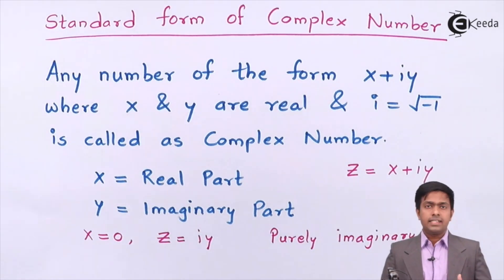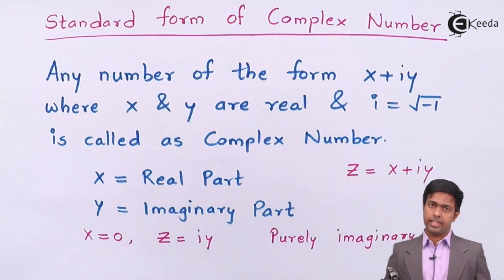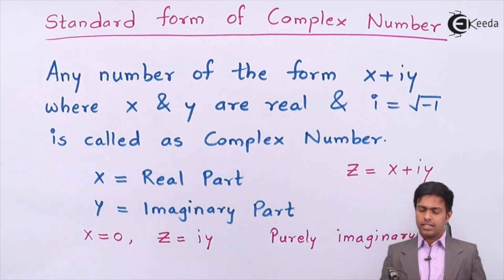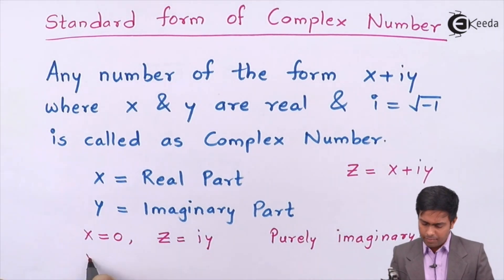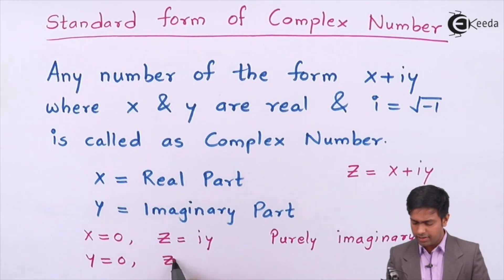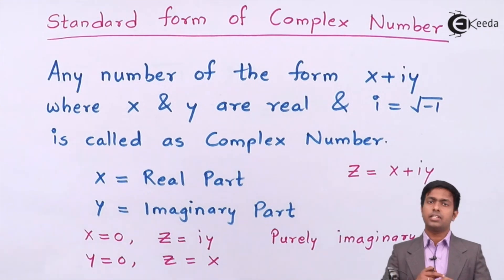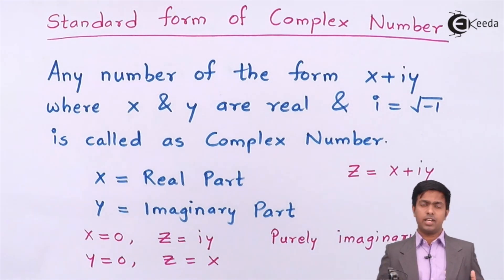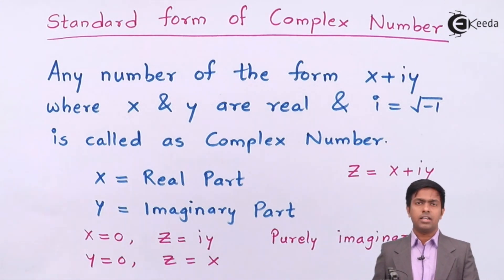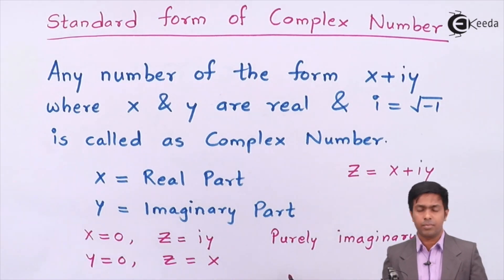Is it possible that y can be 0? Yes. Whenever the imaginary part iy is 0 — meaning y equals 0 — then z becomes just x. There is no imaginary part, only the real part. Such a number is called a purely real number.